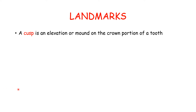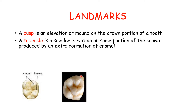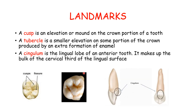A cusp is an elevation or mound on the crown portion of the tooth. A tubercle is a smaller elevation on some portion of the crown produced by an extra formation of enamel. A cingulum is a lingual lobe of an anterior tooth and makes up the bulk of the cervical third of the lingual surface.